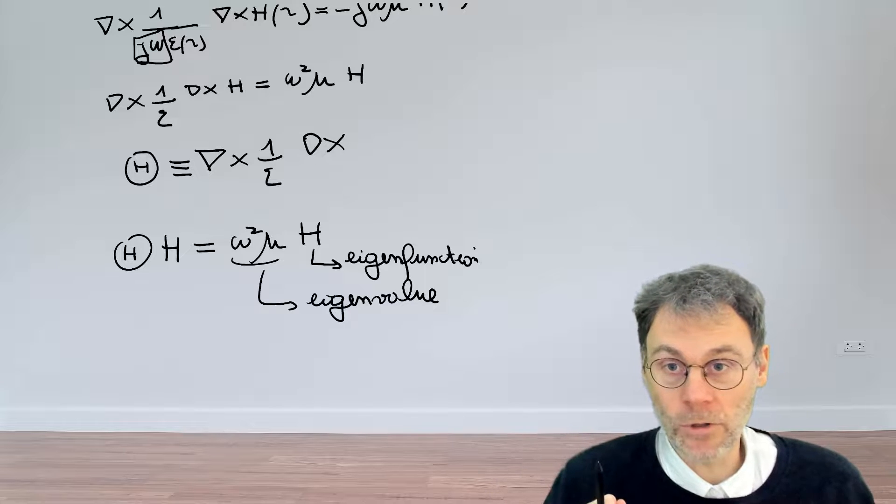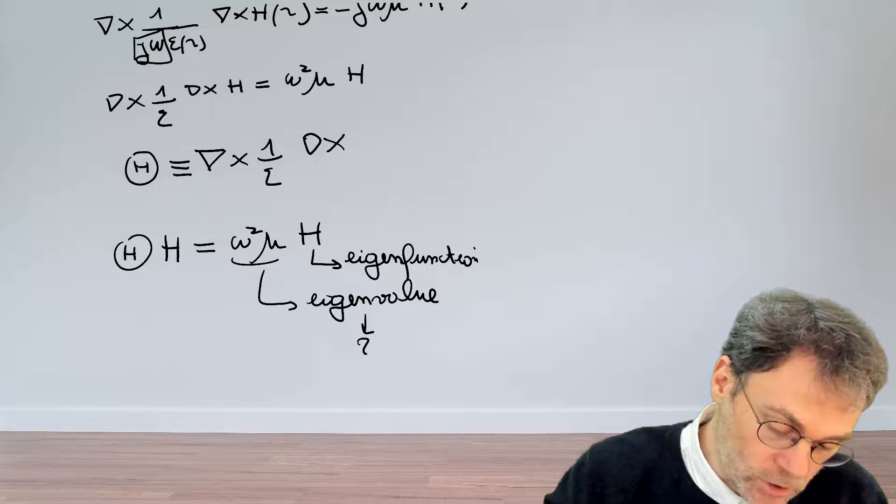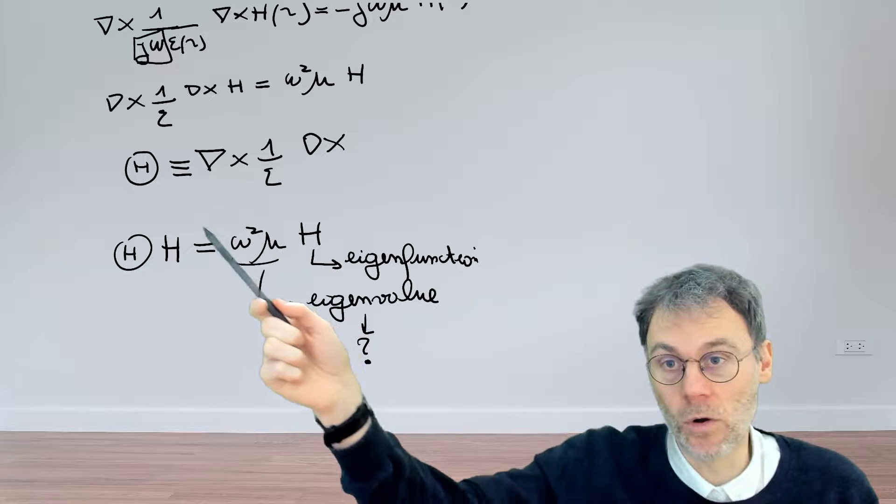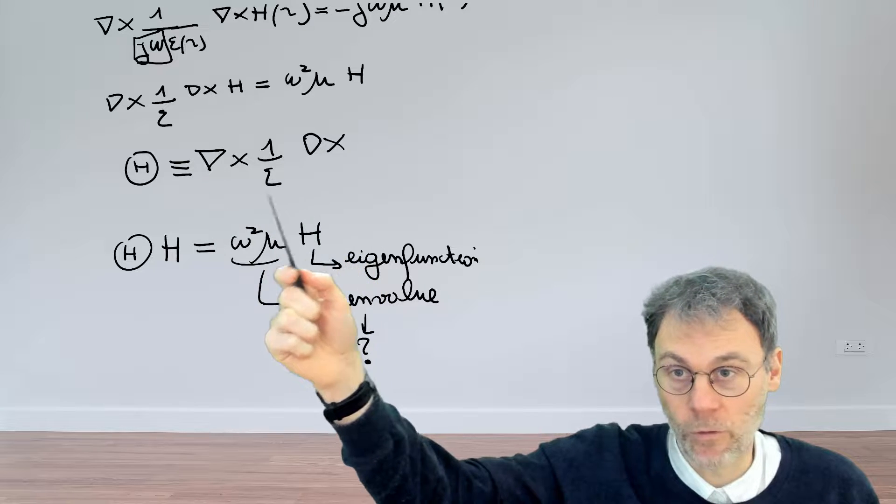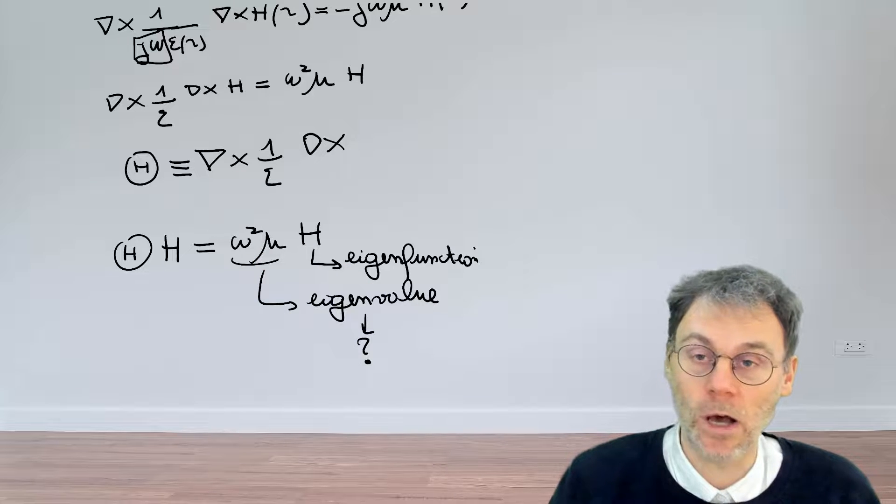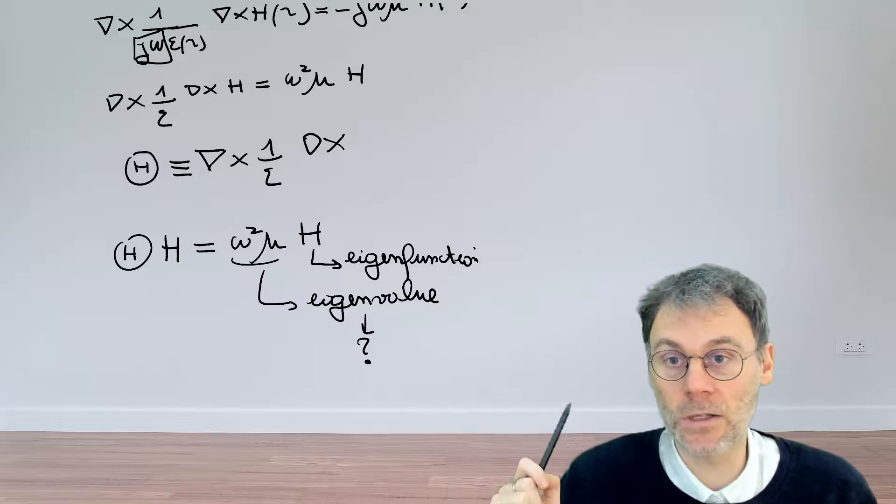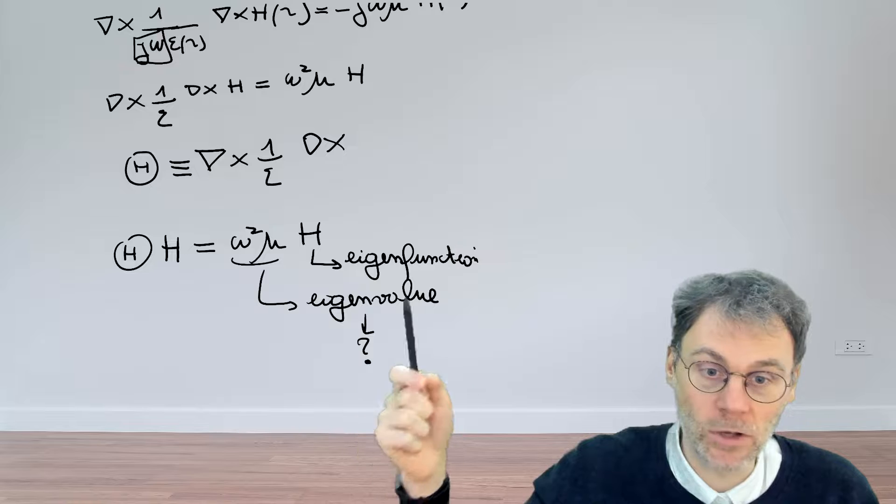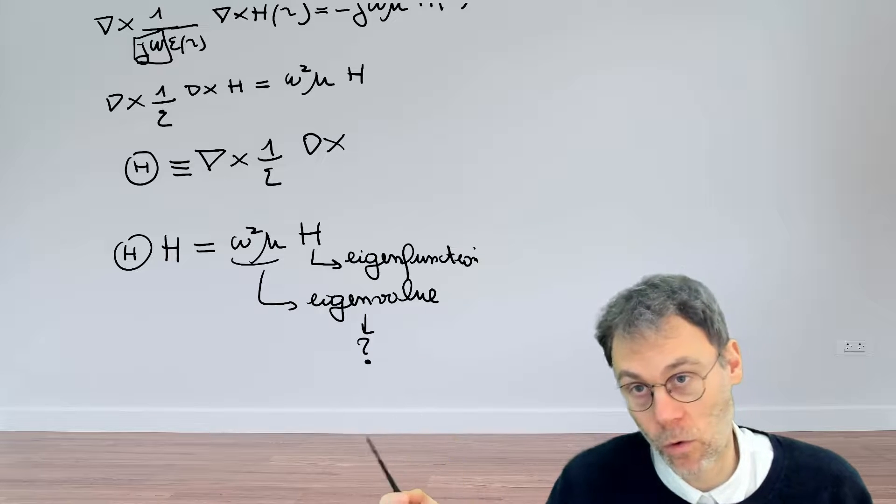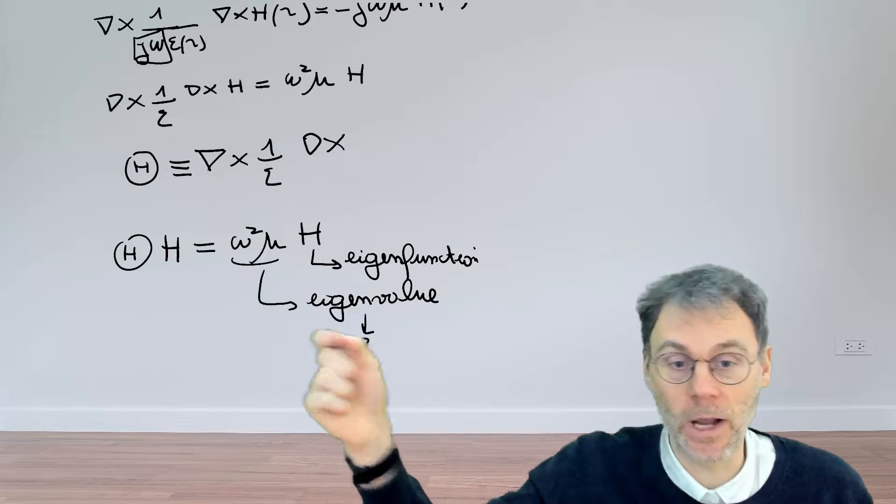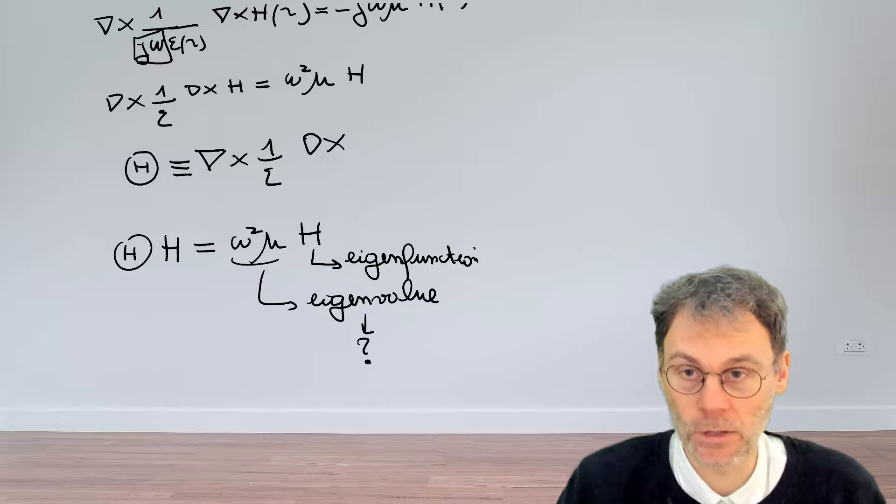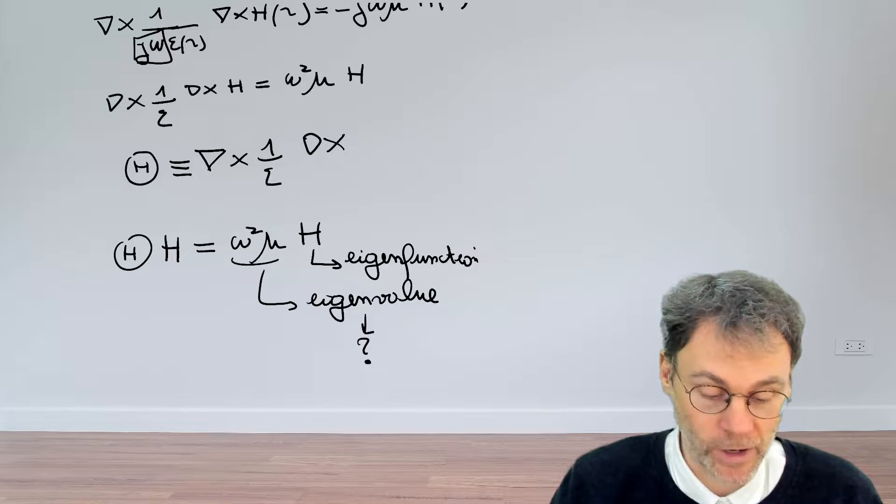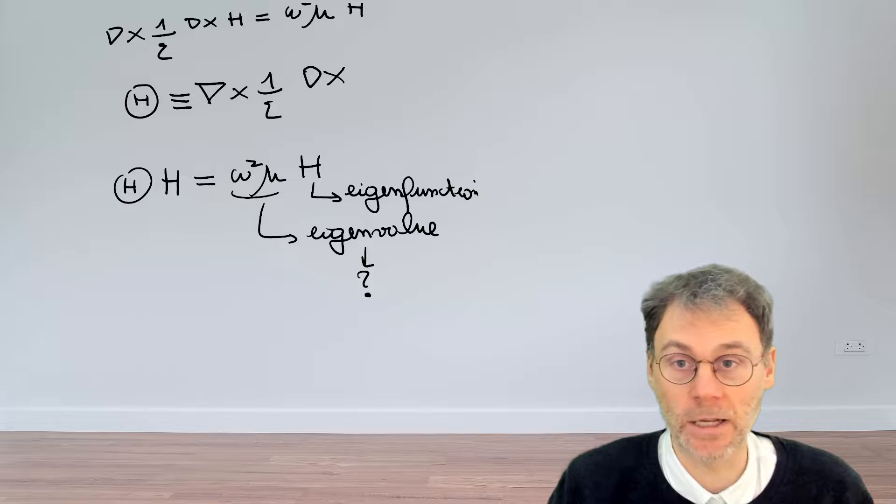Now in this particular chapter we're going to take the viewpoint that this eigenvalue here is an unknown that we want to figure out. So we basically know the distribution of epsilon, so we know the form that this operator takes, and then the question we ask ourselves is what type of solutions to Maxwell's equations, what type of eigenfunctions of this operator do we have, and which eigenvalues do they have, or to put it another way, at which frequencies omega do they resonate. So this is the viewpoint that we're going to take in this chapter, considering Maxwell's equation as an eigenvalue problem, and we want to figure out its eigenfunctions and its eigenvalues.